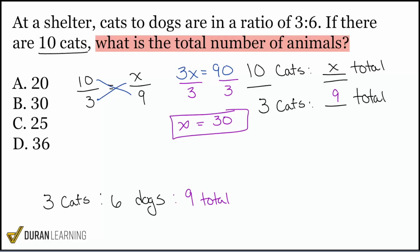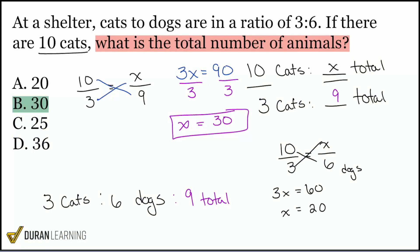x equals 30, because 90 divided by 3 is 30, which means we get 30 total animals at this shelter. Now, if we had used the 6 instead — let me show you what that would have looked like. Using 6 gives us the number of dogs because 6 is the number of dogs in the ratio. That would have given us 3x equals 60, divide by 3 on both sides, giving us 20 — which is 20 dogs.